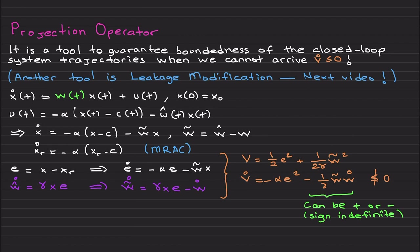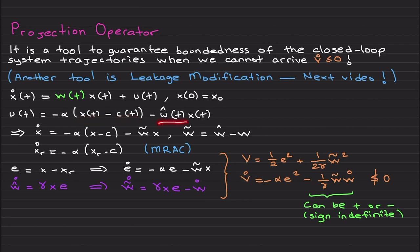As discussed in previous videos, before moving to higher dimensional systems, we are looking at this system. What is different here is that we have a time-varying uncertainty. The control law is the same: here is the nominal control law u_n, which is x minus c, and this is the adaptive control law — estimation of the unknown weight multiplied by x.